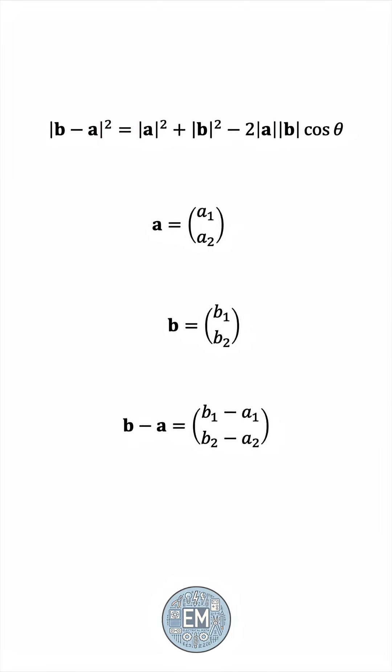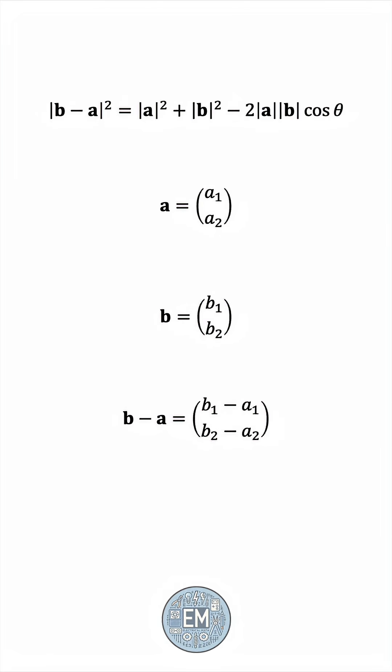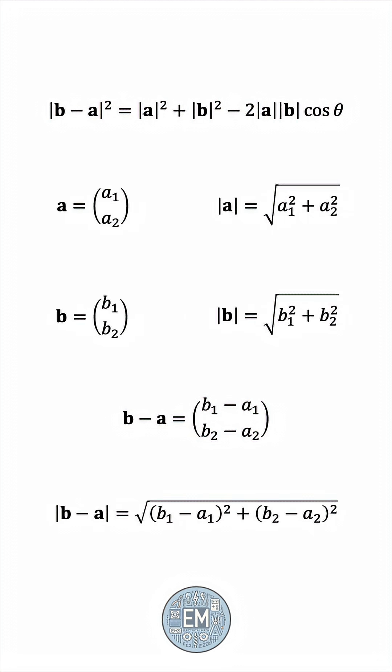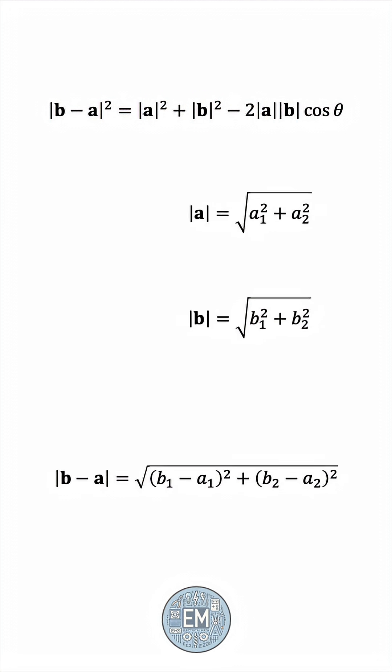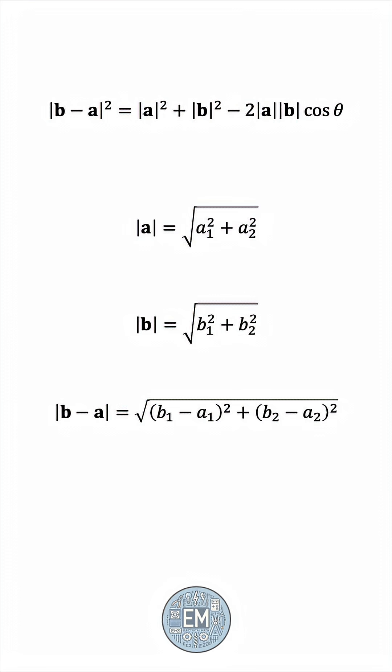The equation involves the lengths of the three vectors, and these can easily be obtained from the Pythagorean theorem. Notice that the equation has the squares of the lengths, and so we'll lose the square roots.